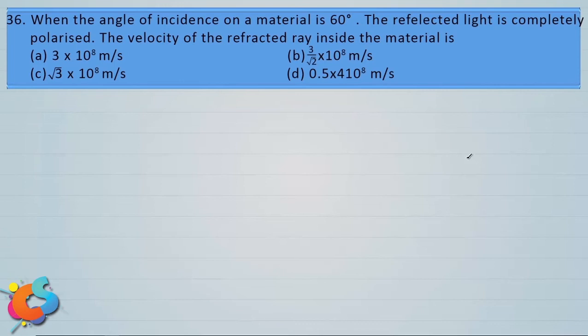When the angle of incidence on a material is 60 degrees, the reflected light is completely polarized. The velocity of the refracted ray inside the material is: a) 3 into 10 power 8, b) 3 by root 2 into 10 power 8, c) root 3 into 10 power 8, and d) 0.5 into 10 power 8, all in meter per second. Since reflected light is completely polarized at 60 degrees, this must be the polarizing angle ip = 60 degrees.